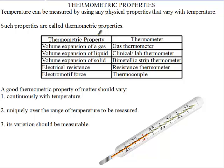There are certain properties that vary with temperature — these are called thermometric properties. Let's look at each thermometric property and then the thermometer, the instrument that measures temperature, that uses that thermometric property.